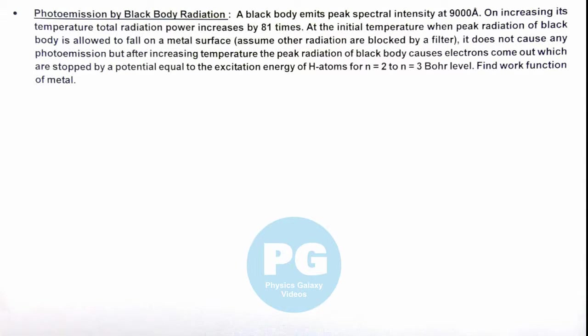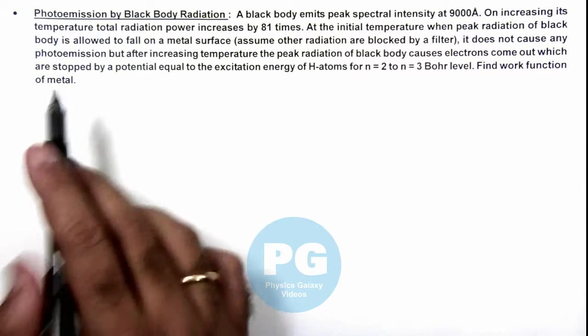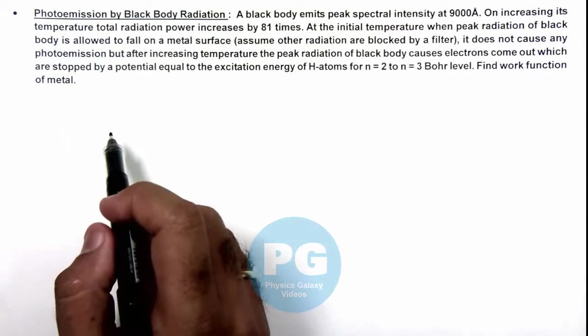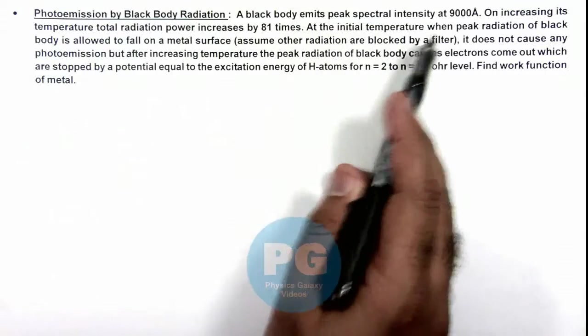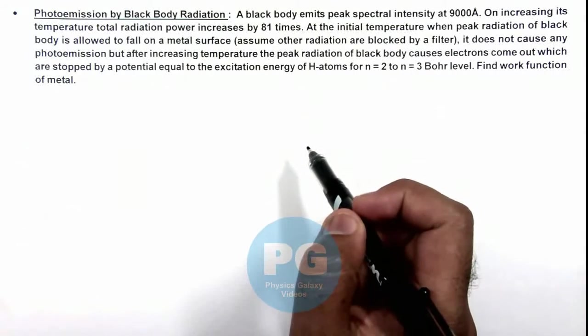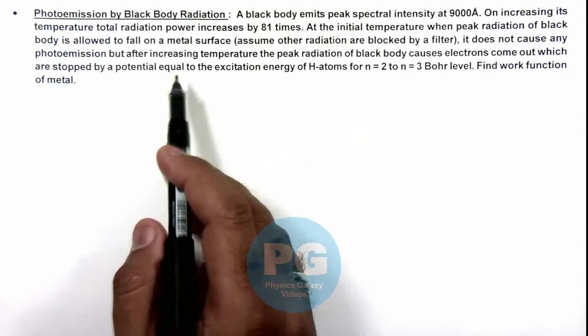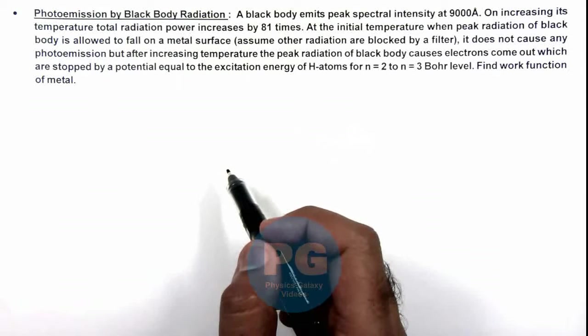In this illustration we'll be analyzing the photoemission by black body radiation. Here we are given that a black body emits peak spectral intensity at 9000 angstrom, and on increasing the temperature, the radiation power increases by 81 times.